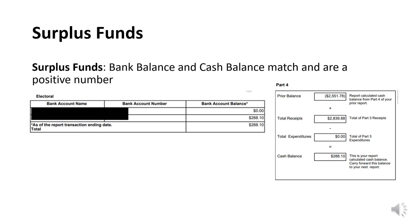If the surplus fund transaction took place in the current reporting period, the committee will select Enter New Expenditure from the left side menu. If the transaction took place in a previous reporting period, the committee will select Amend Transactions from the left side menu, then select the Enter New Expenditures button.